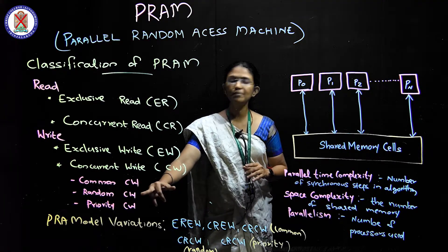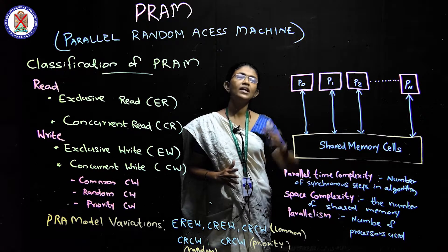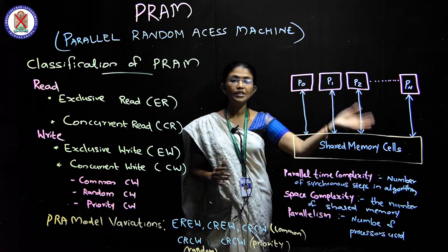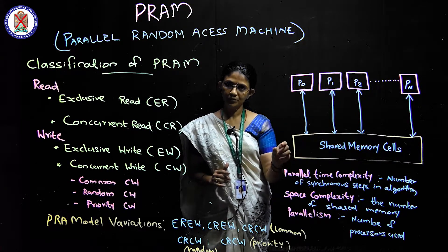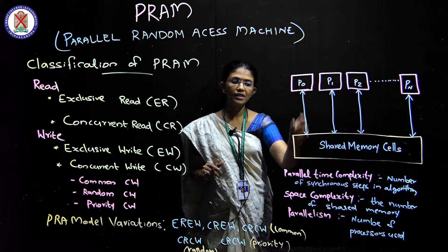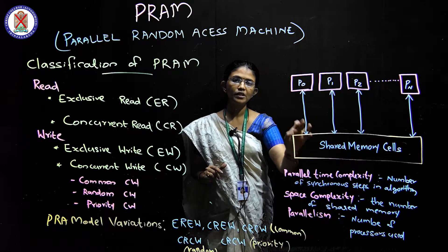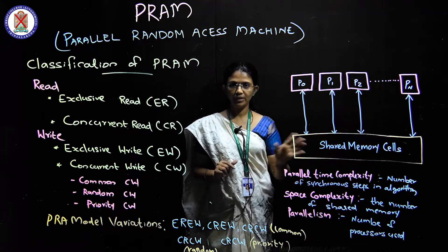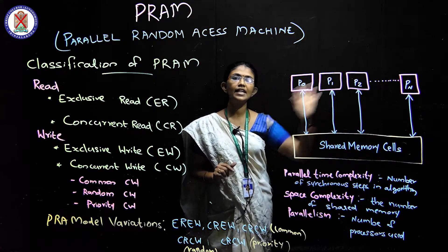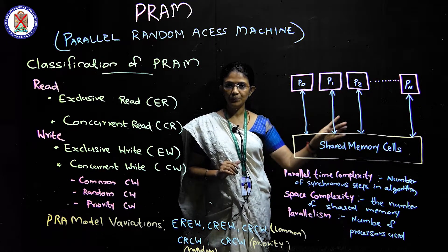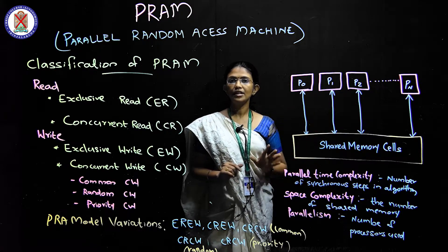The next type is Random — different processes write different data. If processes want to write different data to the same location, one randomly chosen processor is allowed to write. The third type is Priority — processors are assigned priority values, and the processor with the highest priority is allowed to write to the memory location.